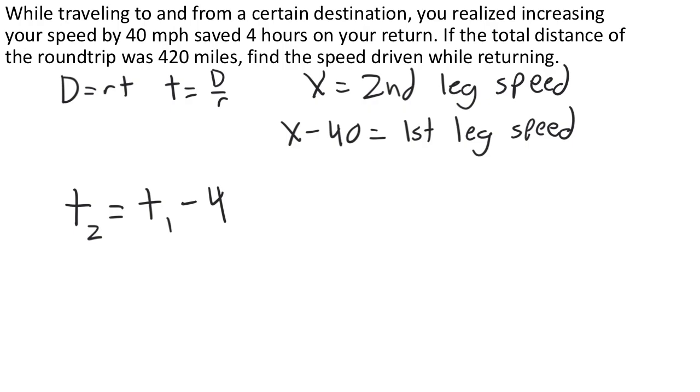And now we have all the components to put together our final equation. We can use the distance over rate formula here to plug in an expression for the second leg time and for the first leg time, and that will give us an equation we can solve. So for the second leg, our distance was half of the total round trip, so 210 miles. And our rate was x. That's what we defined it to be.